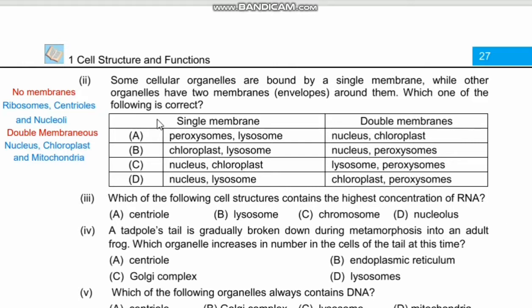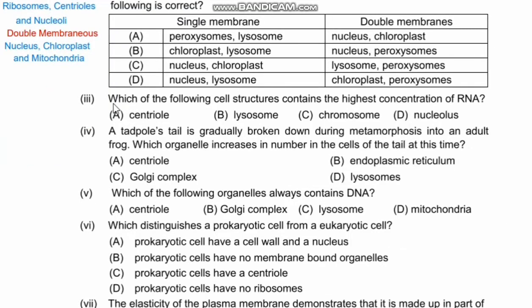Question 3: Which of the following cell structures contains the highest concentration of RNA? Options are centriole, lysosomes, chromosome, and nucleolus. RNA is produced inside the nucleolus, so its highest concentration is also inside the nucleolus. Right option is D.